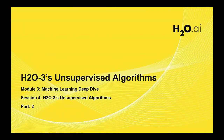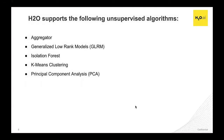Let's jump over to H2O3's capabilities and the available unsupervised algorithms. H2O3 currently supports the following unsupervised algorithms. I'll go over all of them, but for demonstration I'll touch upon the last three. The first is Aggregator — it's a clustering-based method for reducing a numerical or categorical dataset into another dataset with fewer rows. It aggregates certain columns together, and the output is a new aggregated frame that you can access with Python or R.